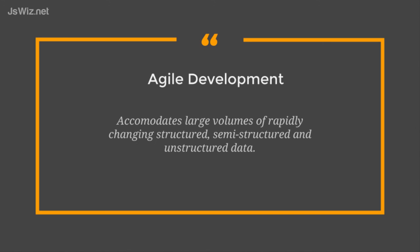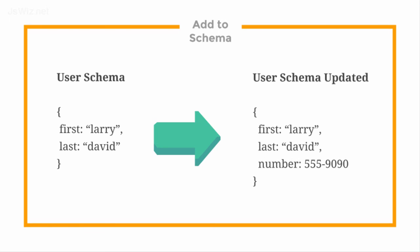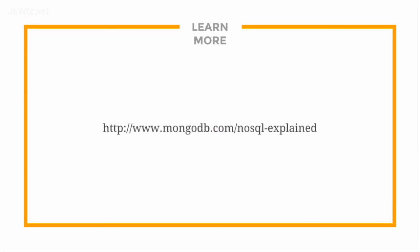That basically means you're able to add to your schema as needs change. An example of this is if you've already created a schema named user with a first and last name, and later you realize you also want to add a phone number — you can simply update your schema to include this new key value. For more information on the differences between SQL and NoSQL databases, you can visit the link below.